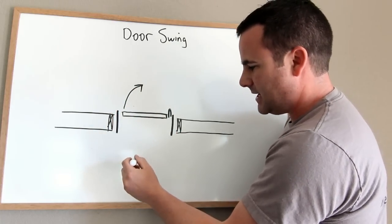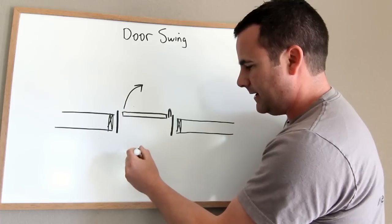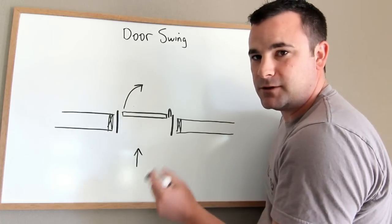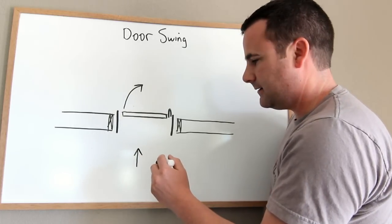The hinge is on the right. So if you're standing on this side looking that way, the hinge is on the right. Therefore, it's a right hand in swing.